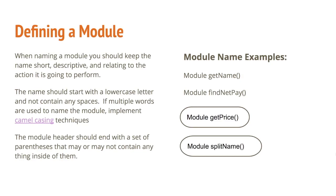You'll see modules that do and modules that don't throughout this, something like get name or find net pay or split name. They may not need information. But throughout the examples that we do in the second, third, and fourth videos, you'll see modules that require information to be placed in. And that information will be called a parameter.